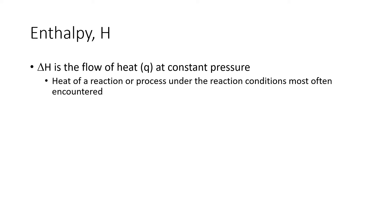Energy can come in lots of different forms such as kinetic energy or potential energy, chemical energy, or thermal energy. The type of energy that we typically get out of chemical reactions is known as enthalpy. If you're looking at the heat flow from a reaction that is carried out at constant pressure, the type of energy we're looking at is known as enthalpy, and the change in enthalpy will be equal to that heat flow at constant pressure.